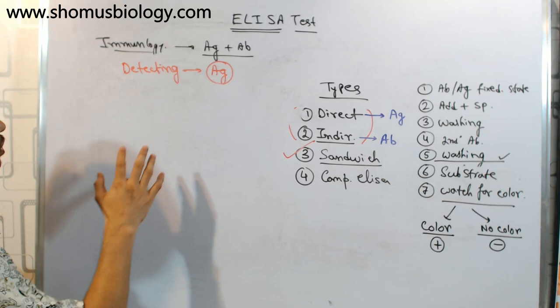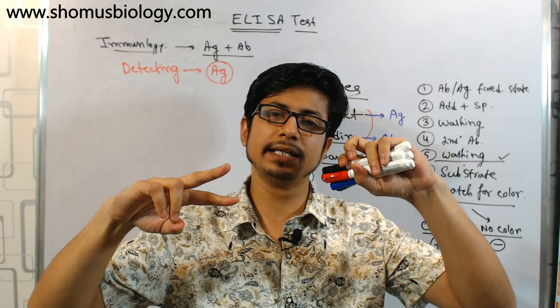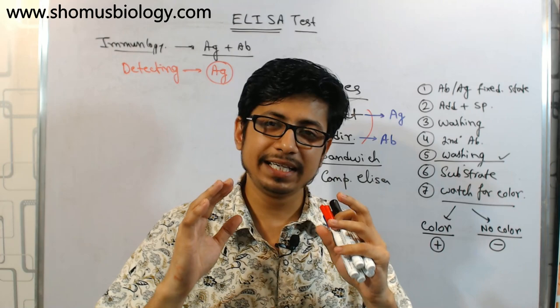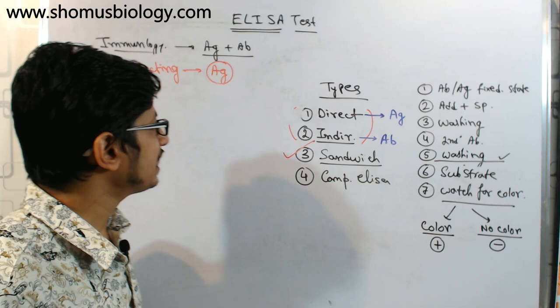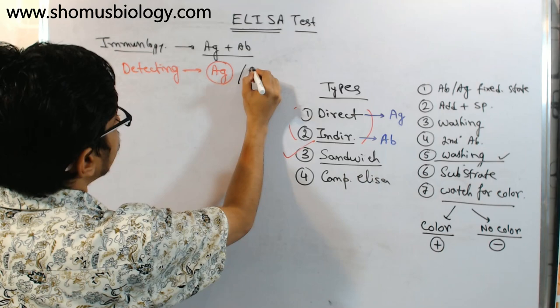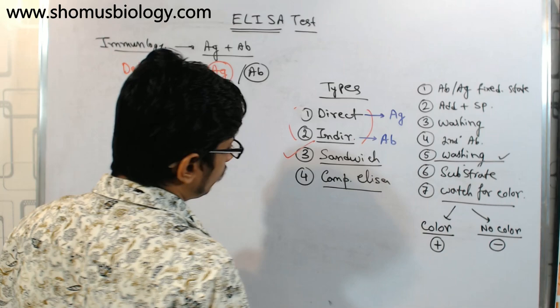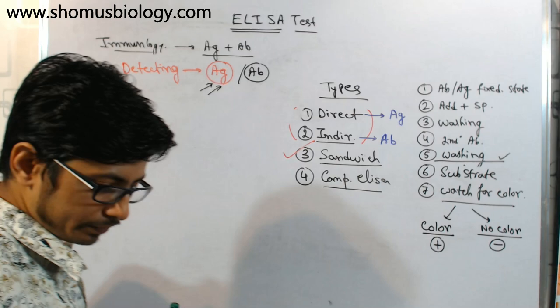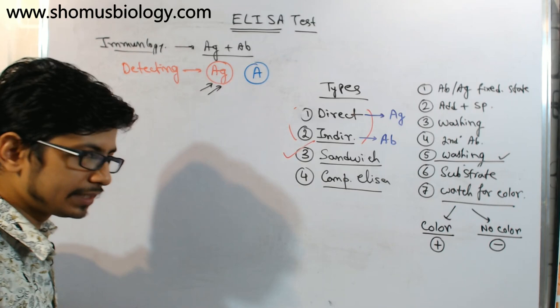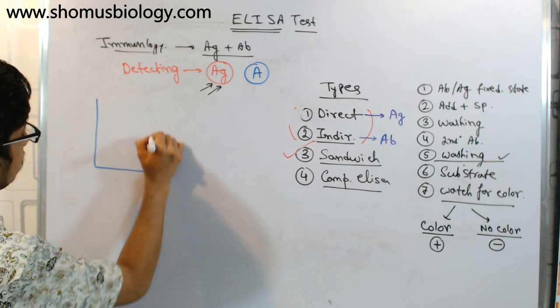The antigen-antibody interaction is very specific — there is an antibody and a specific antigen which the antibody can bind, and this interaction is very specific, targeted, like a lock and key fit. In competitive ELISA, what we are trying to find out is the presence of a specific antigen in the patient's sample. Let's assume the antigen is Antigen A, a specific antigen that we are trying to detect.